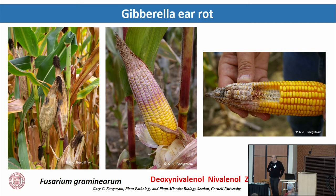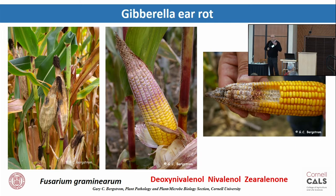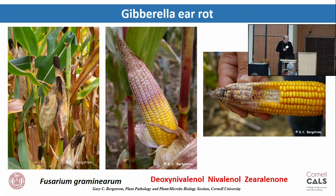Gibberella ear rot — or Fusarium graminearum — is the big problem in grain production in the northern tier. The name really means Fusarium of the grasses — it has a tremendous host range, basically any grass, cereal, grain, plus it can occur on soybean roots and many other things. On corn stubble it produces literally billions of spores on overwintered residue. The typical symptom is a pink ear rot from the tip back. Primary infection occurs through the silk channel — the biggest risk factor is continuous wetness when the silks are emerging.